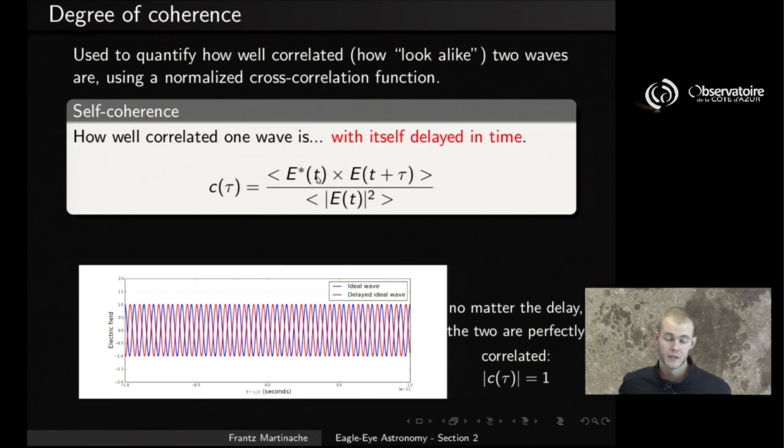Now this is a complex function. Remember that the electric field is described by a complex function. But one way we can quantify easily how well correlated two numbers are is simply to take the modulus of this. If two waves are perfectly correlated, then we should have a self-coherence value of one. If they are not correlated at all, then we should have a number close to zero.